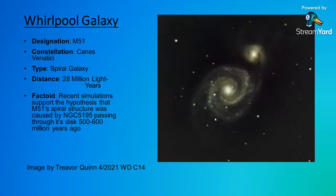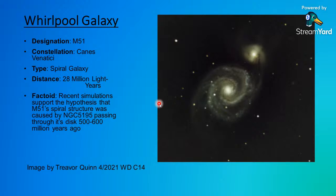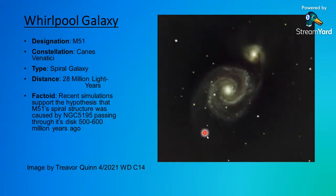Let's look at some actual images. This one was imaged by our own Trevor Quinn back in April 2021. These are anywhere between 20 to 25 and 60 to 100 exposures, with exposure length anywhere from five seconds to 15 to 18 seconds. He nabbed M51 — you can see the spiral galaxy, decent structure, some wisps, and that arm coming out. You might get some of this visually, but you wouldn't get all of it.